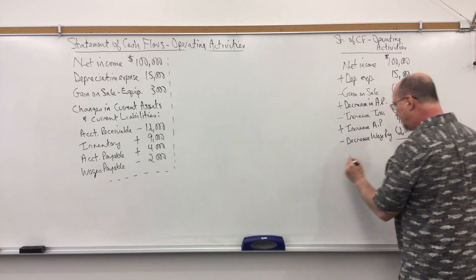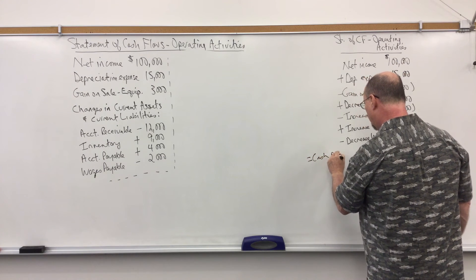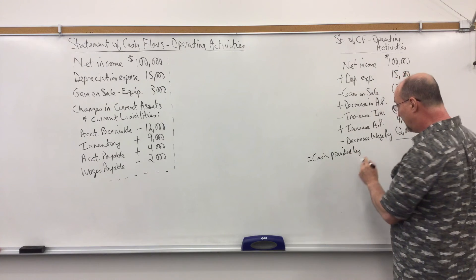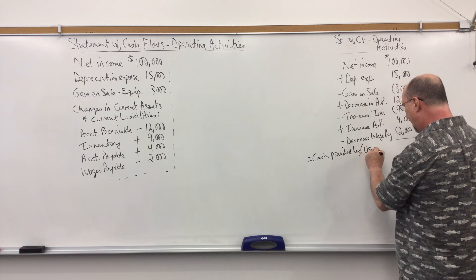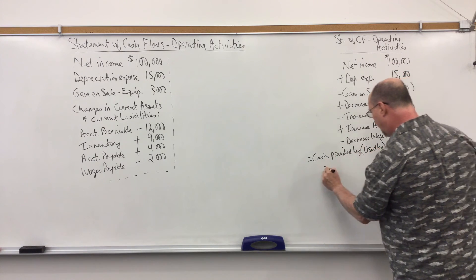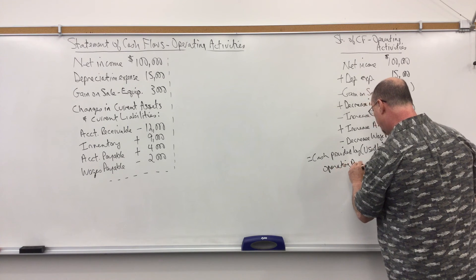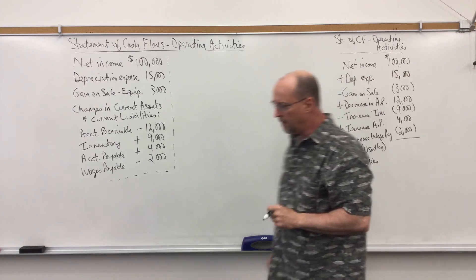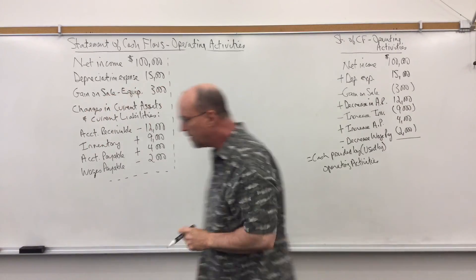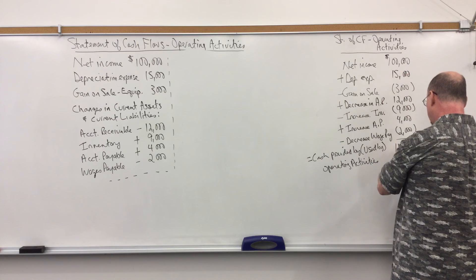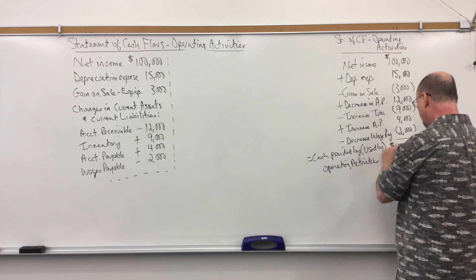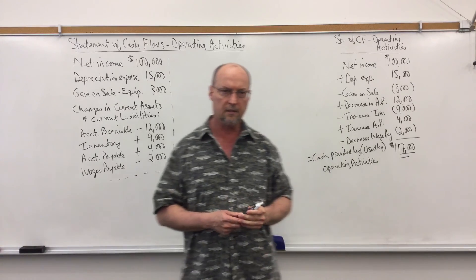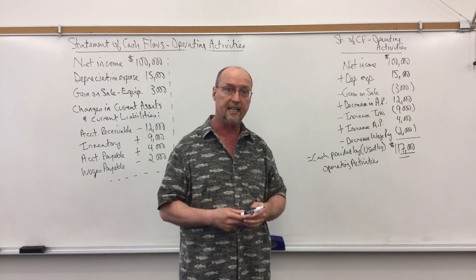That gives us cash provided by operating activities — assuming it's a positive number; if negative we'd say cash used by operating activities. That number comes to $117,000. And that is how you do the operating activities section on the statement of cash flows using the indirect method.